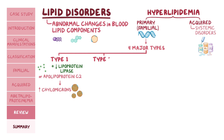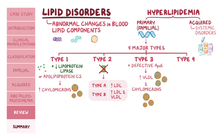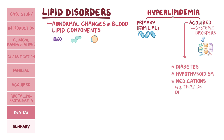Type 2 is caused by an absent or defective LDL receptor, resulting in elevation of LDL in type A and both LDL and VLDL in type B. Type 3 is caused by defective ApoE, leading to elevation of VLDL and chylomicrons. Type 4 hyperlipidemia is characterized by increased hepatic production of VLDL. Acquired causes include diabetes, hypothyroidism, and medications like thiazide diuretics.